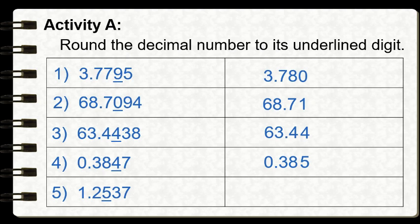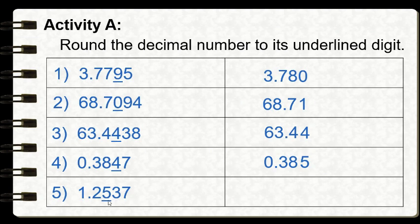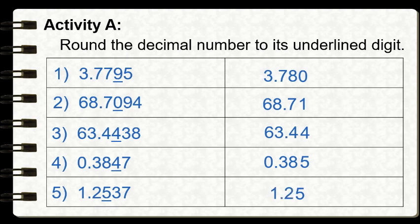Number five: one and two thousand five hundred thirty-seven ten-thousandths, with the underlined digit five occupying the hundredths place. The digit to the right of our rounding place is three. Since three is less than five, we round down — we copy or retain our rounding digit, which is five. We copy all digits to the left: one and two tenths. We drop all digits to the right — thirty-seven. Our final answer is one and twenty-five hundredths.